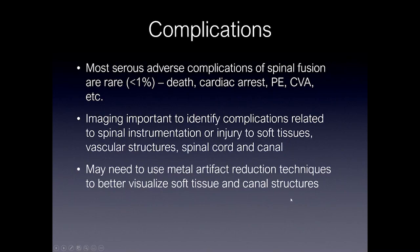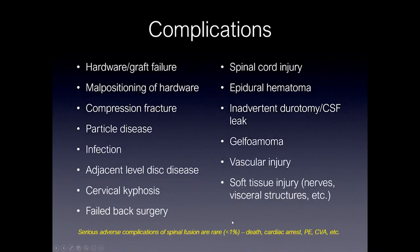Moving on to complications — most serious adverse complications of spine fusion are rare and include death, cardiac arrest, pulmonary embolus, and cerebrovascular events. Imaging is important to identify complications related to spine instrumentation or injury to the soft tissues, vascular structures, spinal cord, and canal. You may need to use metal artifact reduction techniques or different types of imaging to better visualize soft tissue and canal structures. Serious adverse complications of spinal fusions are less than 1%.